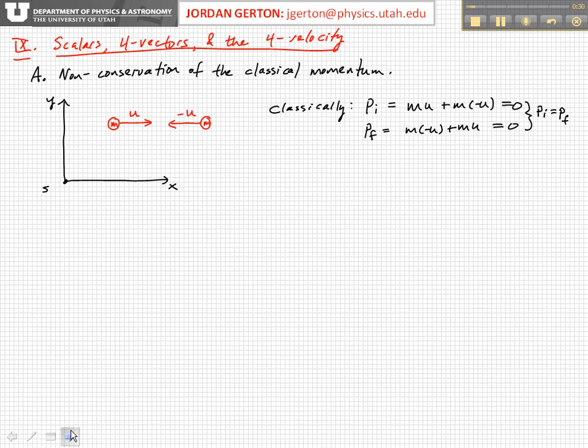Before we do that, let's motivate this discussion of four vectors by considering a classical case and how momentum is conserved in a classical situation. So let's imagine that we have a frame S, and we have two particles, each with mass M, moving towards each other with speed U as depicted here.